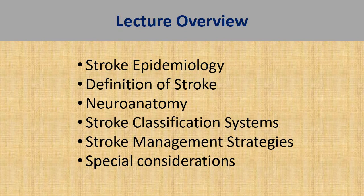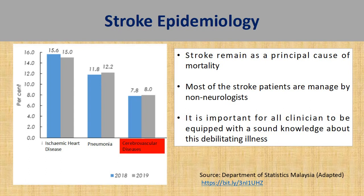This slide gives a graphical illustration of the points mentioned earlier. You can see that stroke was one of the most important causes of mortality amongst Malaysians — in fact, it was ranked as the third commonest cause of mortality in 2018 and 2019. Therefore, it's important for all of us to have a sound knowledge about this debilitating illness.